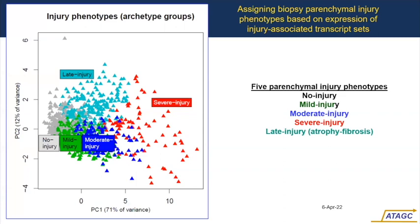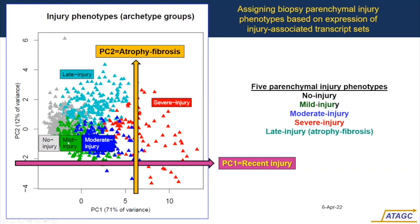Using injury associated transcript sets — parenchymal genes induced in experimental models like cardiac isografts — we get principal component one covering no injury through mild, moderate, and severe injury. Principal component two is the atrophy fibrosis phenotype, the late change. We conservatively call this late injury. The characteristic of these hearts is they develop immunoglobulin genes — characteristic of kidneys undergoing scarring, and also of lungs and livers undergoing time-dependent changes.